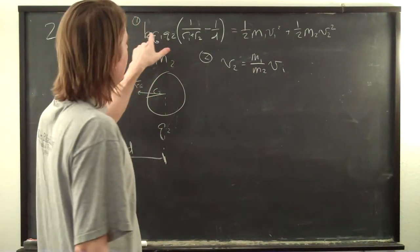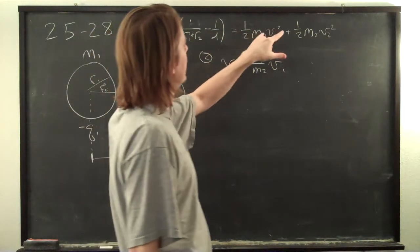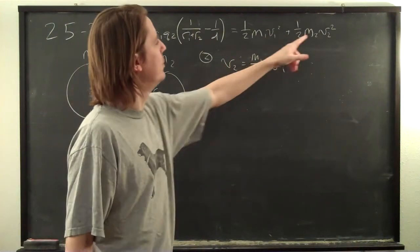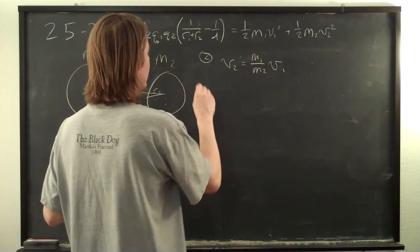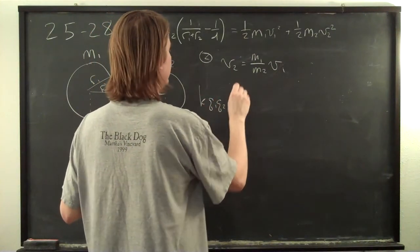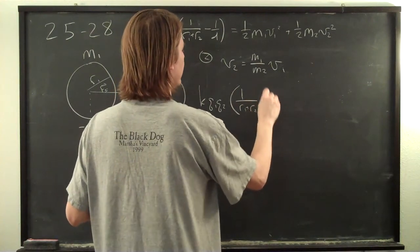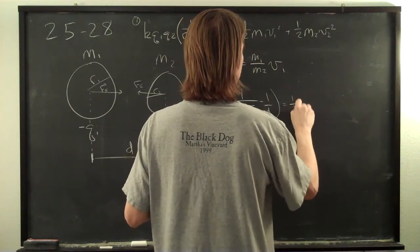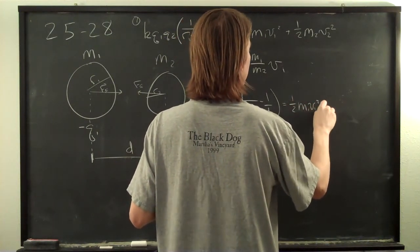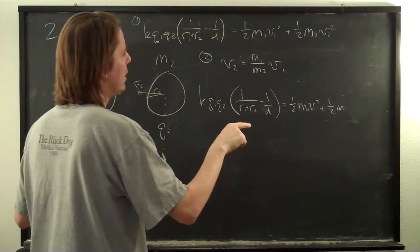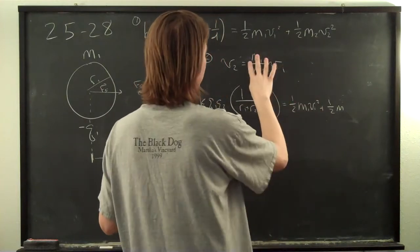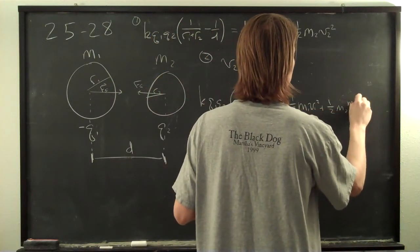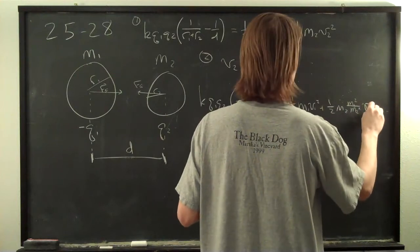Okay, so we've rewritten here. This is our energy equation, or our potential. Difference of potential equals the sum of the kinetics, and here is conservation of momentum. So we're just going to substitute this v2 for that v2. So we can say k q1 q2 1 over r1 plus r2 minus 1 over d equals 1/2 m1 v1 squared plus 1/2 m2 times this whole thing squared. So it's really going to be m2 times m1 squared over m2 squared, v1 squared.